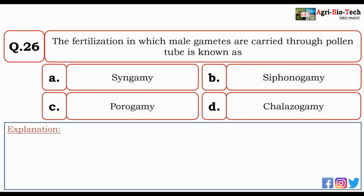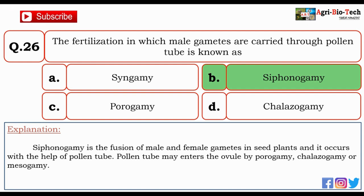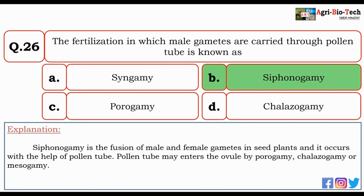Next question: the fertilization in which male gametes are carried through pollen tube is known as — syngamy, siphonogamy, porogamy, or chalazogamy? The correct option is B — siphonogamy. Siphonogamy is the fusion of male and female gametes in seed plants, occurring with the help of a pollen tube. The pollen tube may enter the ovule by porogamy, chalazogamy, or mesogamy.